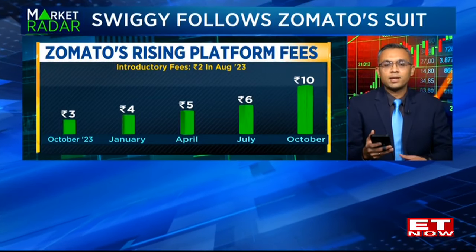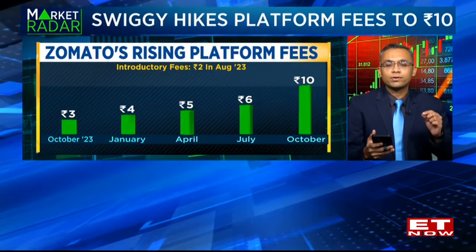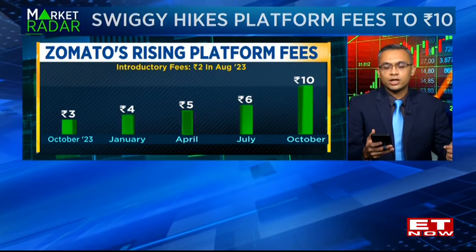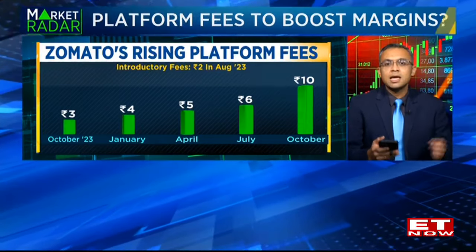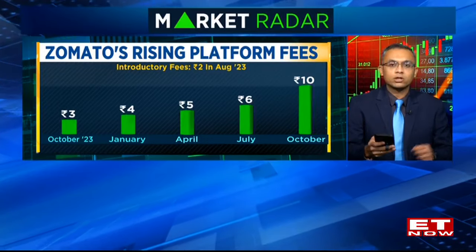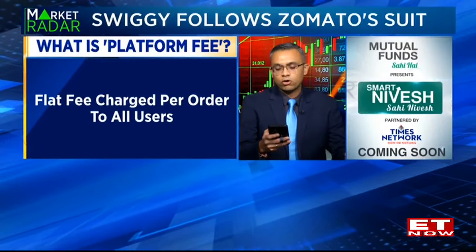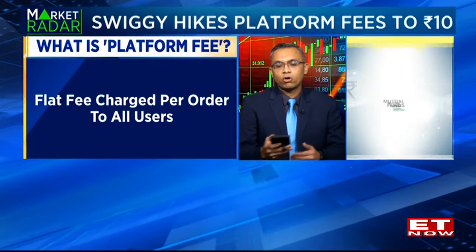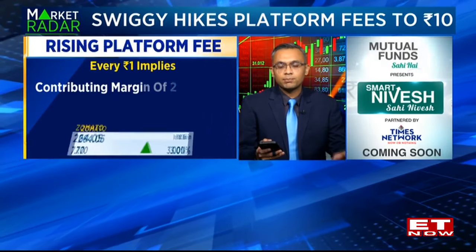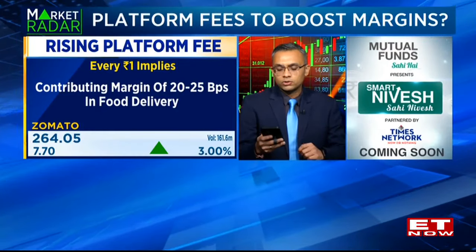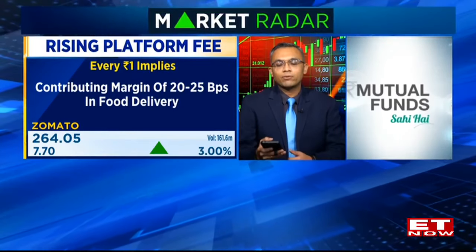The first five hikes were of 1 rupee each, and this latest hike has been of nearly 4 rupees. The earlier platform fee charged by Zomato and Swiggy was around 6 rupees, and the current platform fee is at around 10 rupees per order. This fee is levied on every order irrespective of the order amount, and is charged to every customer whether they are a member or non-member on the Zomato or Swiggy platform.